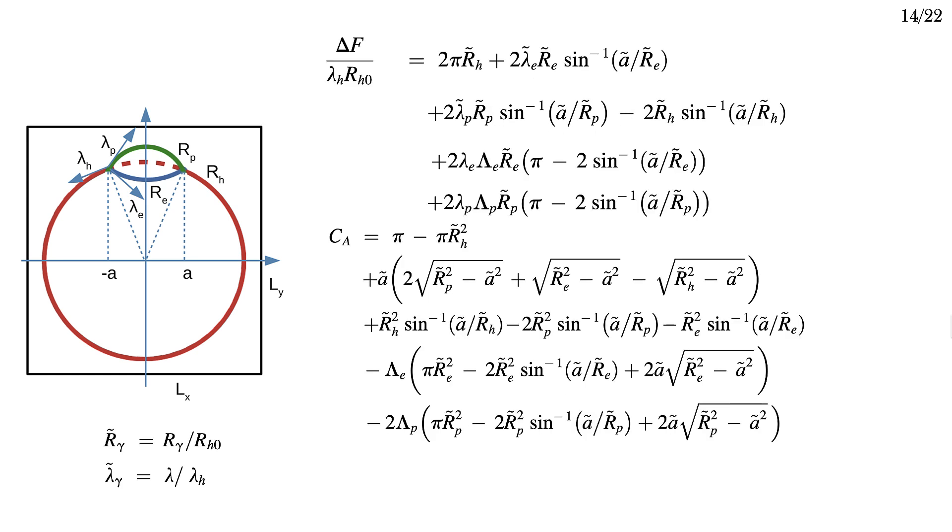It turns out to be convenient to scale out a length and a line tension from the description. The tilde indicates such a scaling. I've chosen the radius of the unperturbed hemifusion diaphragm as the reference length, and lambda h as the reference line tension.